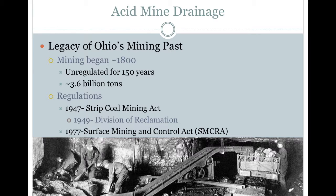Ohio has a long history of coal mining. Industrial mining is believed to have begun in the late 1700s or early 1800s. We do not actually know how long mining has occurred, as the industry was largely unregulated until 1947. Coal mining has been and continues to be an important industry in southeastern Ohio, with an estimated 3.6 billion tons of coal being mined. After the end of World War II, mining shifted from labor-intensive underground mining to strip mining using large industrial machinery.